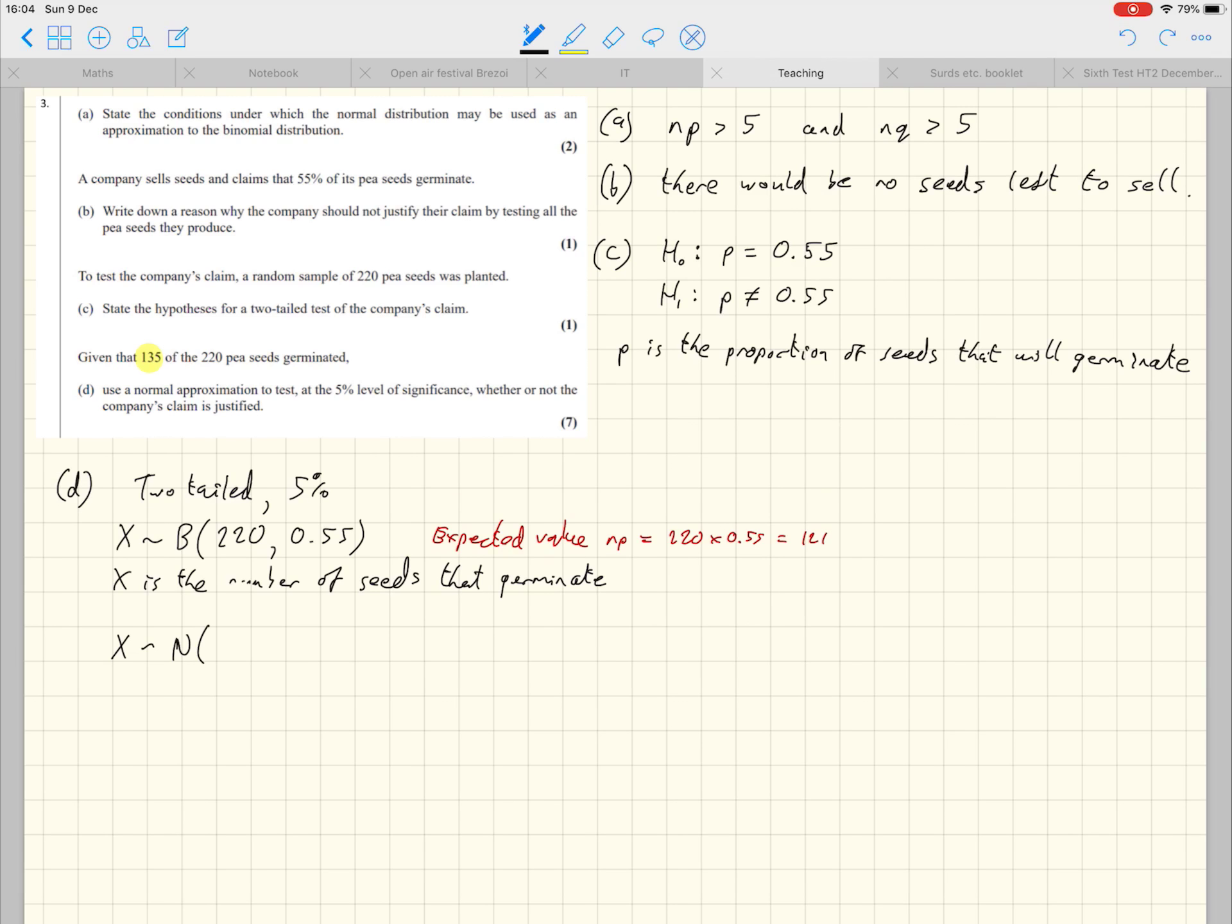NP comes out to be 220 times 0.55. That we actually worked out before, which is 121. And NPQ comes out to be 54.45. Remember, that is the variance already. We don't need to write squared because that would imply that the standard deviation is 54.45. So it's the variance that's 54.45. So we leave it like that.